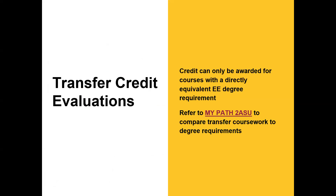Transfer credit evaluations: credits can only be awarded for courses with a directly equivalent electrical engineering degree requirement. You may notice at the bottom of your degree audit that some classes are listed as transferable but aren't applying to anything specific — that doesn't mean those courses won't be applicable. For example, if you see calculus one at the bottom not associating with a degree plan requirement, it likely means that course was never previously transferred to ASU and was never evaluated. You'll need to go to the transfer guide, submit that course with a syllabus for evaluation to gain equivalency. You can use My Path to ASU on the transfer guide to compare your coursework to degree requirements before you even apply, and there is a submit-your-course-for-evaluation link on the same website.